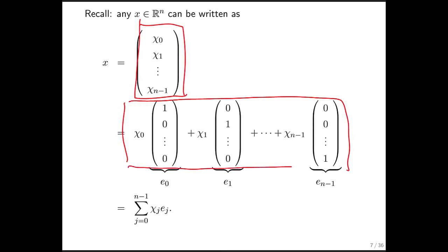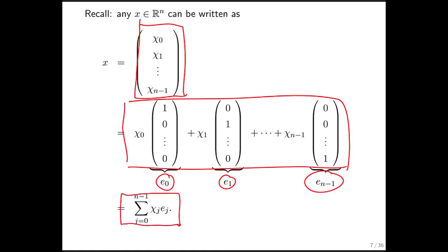We saw that in week one. We used the notation E0 for the first unit basis vector, E1 for the second one, and so forth. More concisely, we can write this as such. The vector x can be written as the linear combination of the unit basis vectors using the coefficients that are the components of the vector x. This is very important for the next steps.